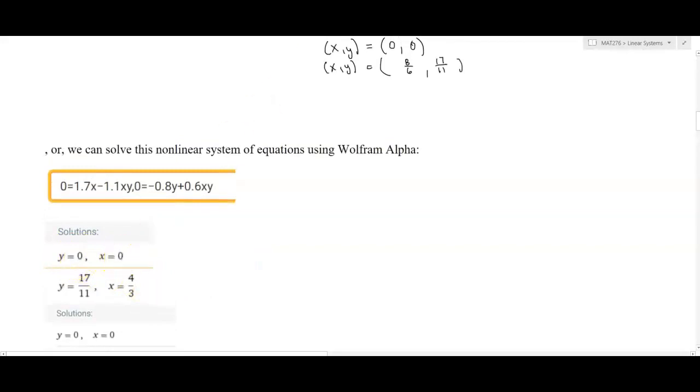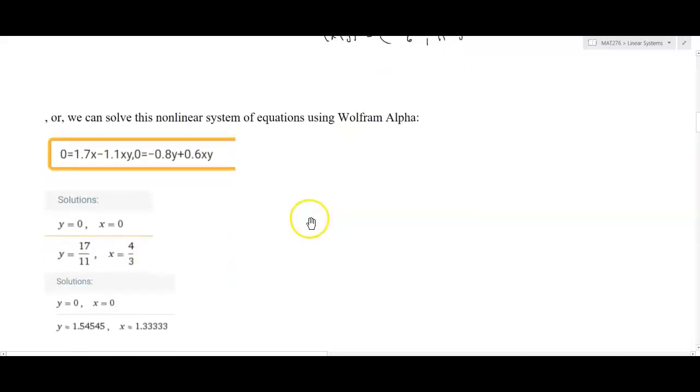If I scroll down far enough, I'll see the two solutions. y is zero, x is zero - that matches our equilibrium point we found first. And then the second one, x equals four thirds, y equals 17/11. Well, that's the same thing as 8/6. We found the exact same solutions. There's also an option to press approximate form to see decimal approximations. 17/11 is about 1.55 and 4/3 is about 1.33.